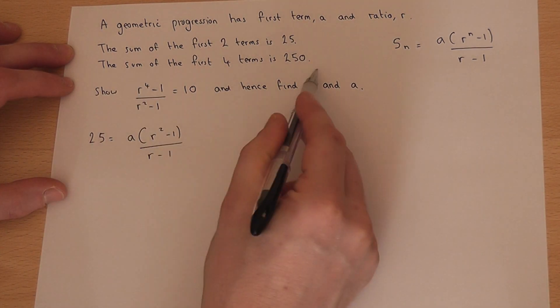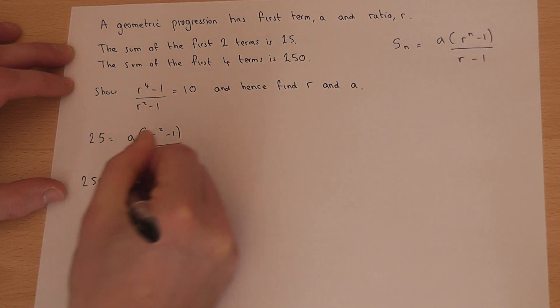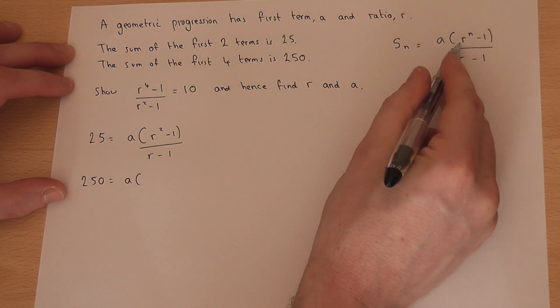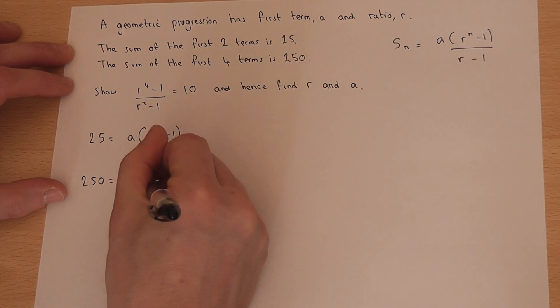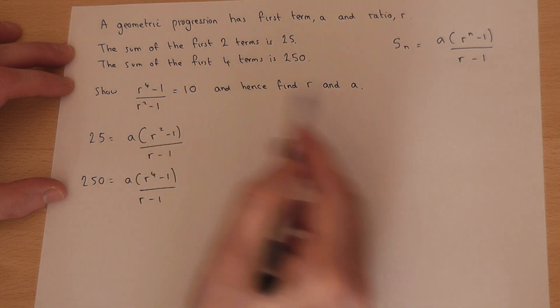The second statement says that the sum of the first four terms is 250. So 250 equals a(r⁴ - 1)/(r - 1). And from these two statements we can get this rule here.